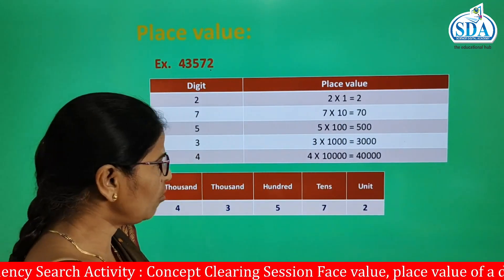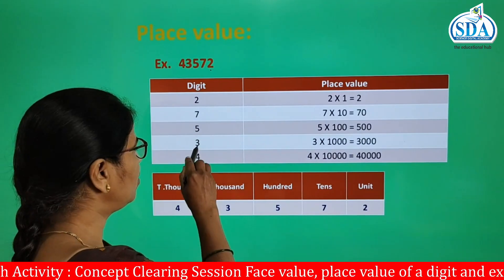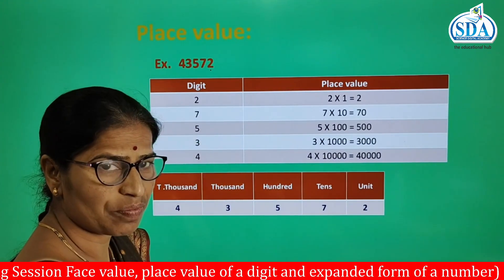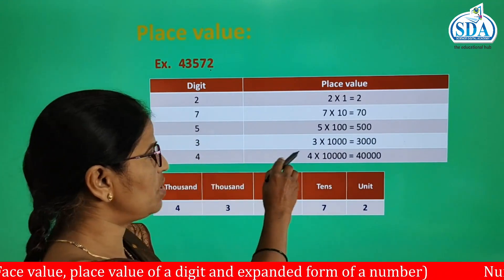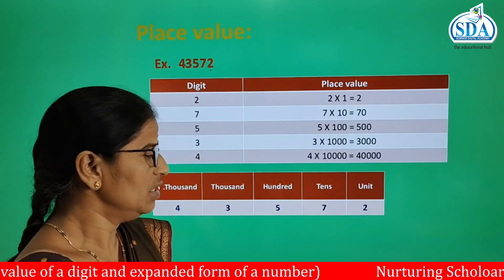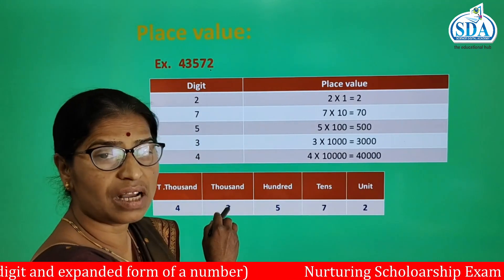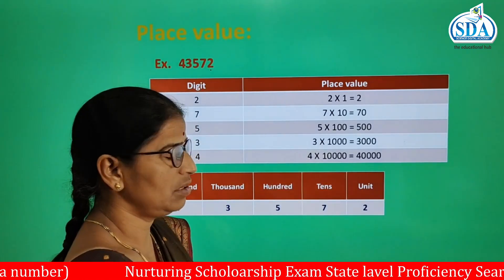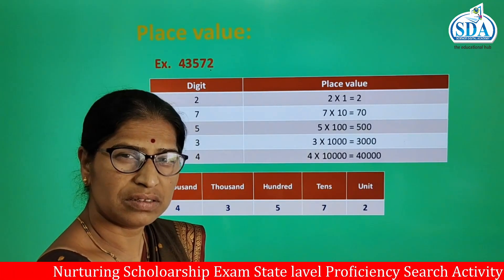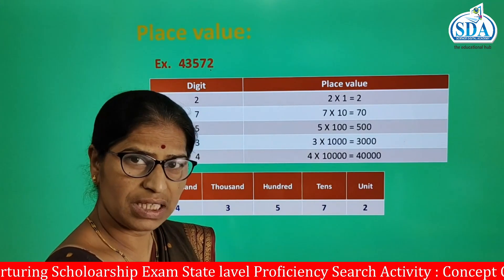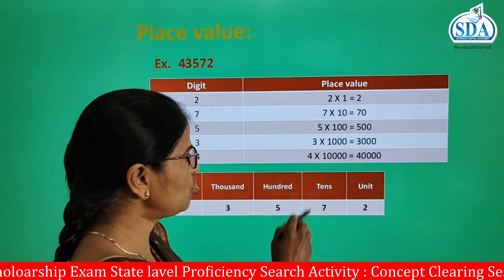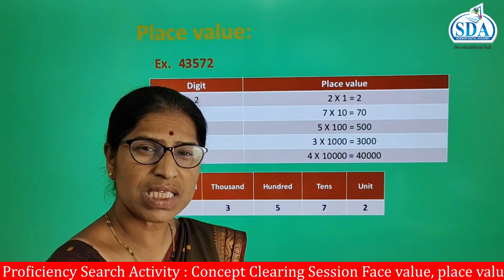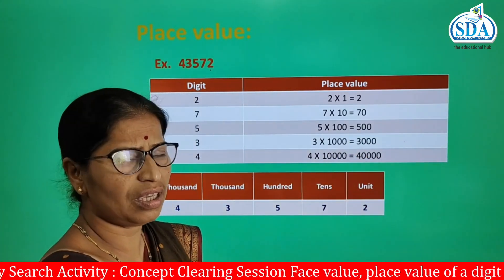We can also find the place value of digits 3, 4, and 7. For digit 3, it is at the thousands place. Therefore we multiply 3 by 1000, so 3 multiplied by 1000 is equal to 3000. That is the place value of digit 3 in this number.